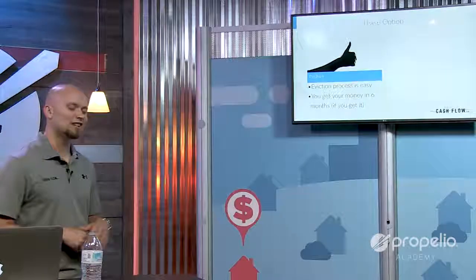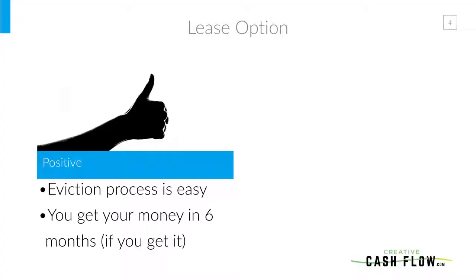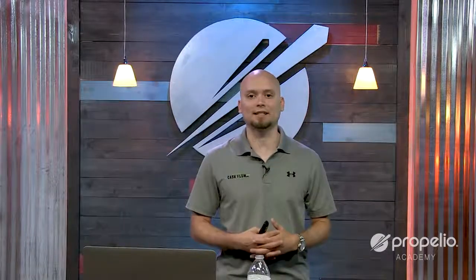Another positive is that you're going to get your money within about six months. If you don't get it, you get the asset back. If they already gave you $4,000 or $6,000 and then didn't satisfy their lease obligations and you're evicting them, it's kind of free money — you've gotten somewhat of a down payment, gotten payments for up to six months, and then you get the asset back again and you're able to sell it again.